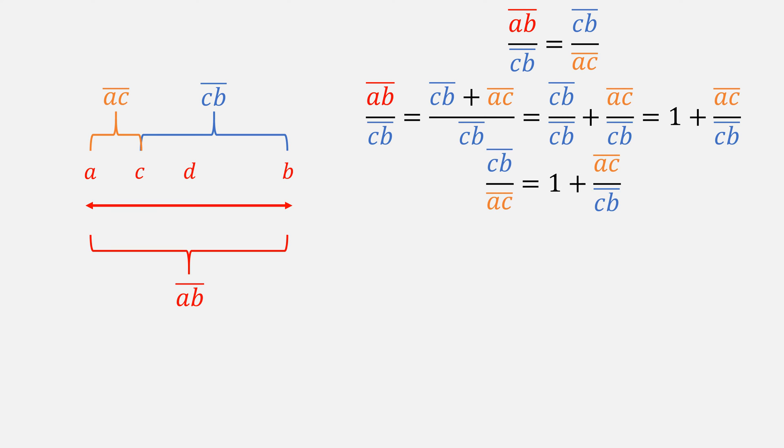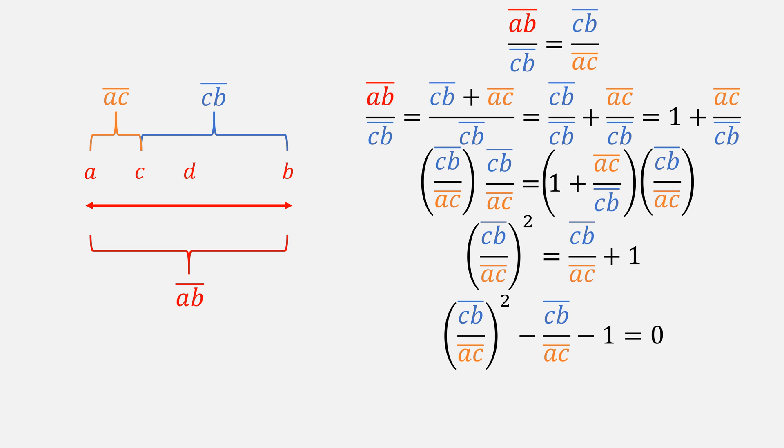Afterwards, knowing our inequality from the top, we can rewrite it to be like this. Multiply both sides by that CB over AC fraction, and we get this equality such that CB over AC squared is equal to CB over AC plus 1. Rewrite it so that it's equal to 0. This means our ratio is equal to 1 plus the square root of 5 over 2, known as the golden ratio.